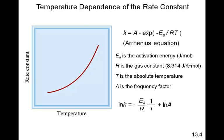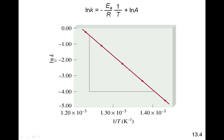If we rearrange the Arrhenius equation and do a little math, we can get an equation that looks like this. This is an exponential function: K equals A times e raised to the minus Ea over RT. Scientists prefer straight lines, so by doing a little math on the Arrhenius equation, we get a linear form where the natural log of K equals minus Ea over R times 1 over T, plus the natural log of A. By plotting the natural log of K versus 1 over T, we get a straight line.